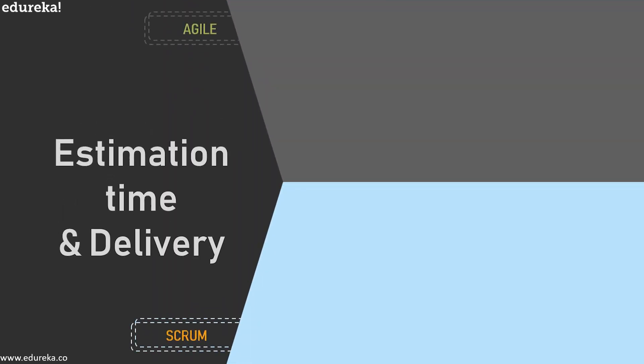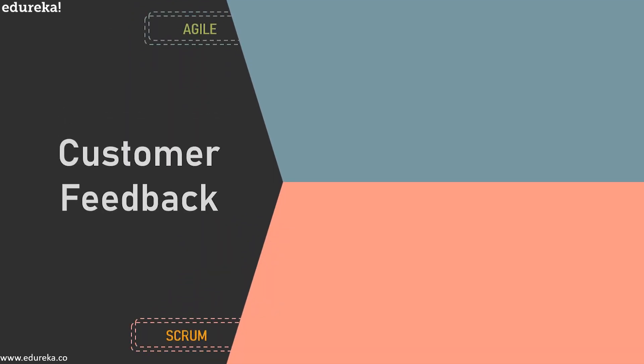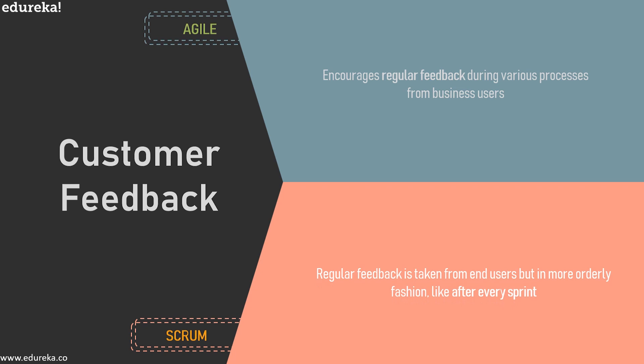On communication: Agile involves collaborations and face-to-face interactions between members of various teams. In Scrum, communication is done on a daily or weekly basis with fixed roles assigned to the scrum master, product owner, and development team members. On estimation, time, and delivery: Agile usually involves delivery of the product after high-value addition or in the advanced stage of development. Delivery in Agile tends to be towards the project end, while Scrum delivers a build to clients after each sprint, delivering maximum business value from the beginning and continuing throughout the cycle. On customer feedback: in Agile, the completed work is frequently sent to the end user for feedback. Scrum follows the same approach but in a more orderly fashion — a build is shown to the user at the end of every sprint cycle. While Agile keeps processes simple, Scrum allows for experimentation and innovation.